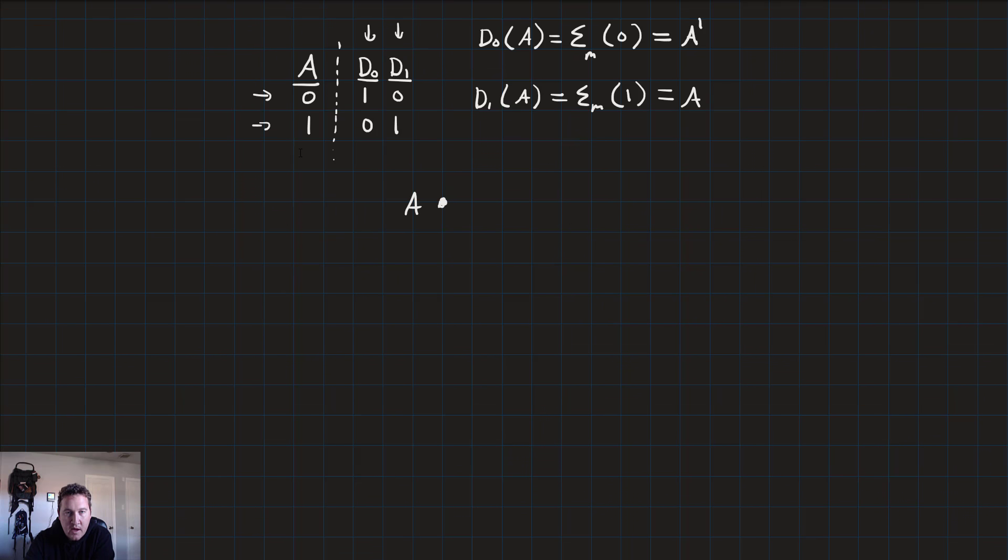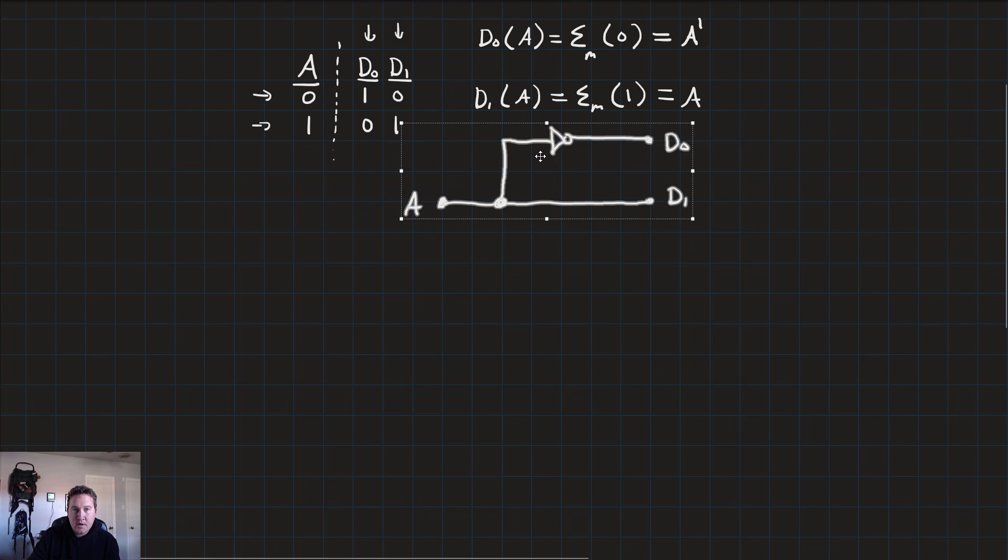So we go to build it A and we'll have, let's put D0 up here and D1. Now since D1 is just equal to A, we can tie a line directly from A to D1 and then we'll break off a node and bring it up and feed that through an inverter to D0. And there we have it. There is our circuit for a 1 to 2 line decoder.